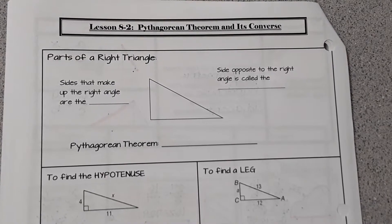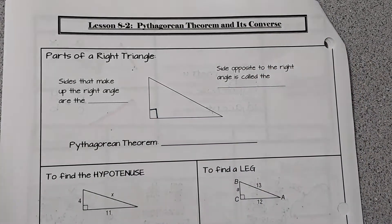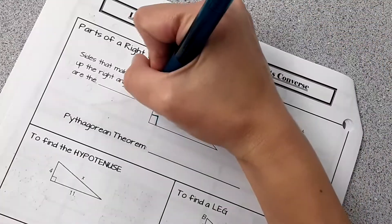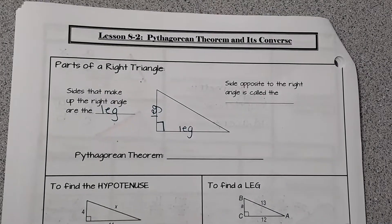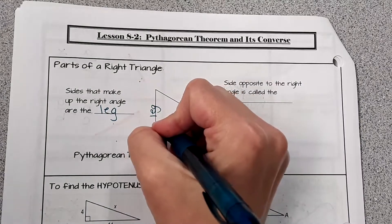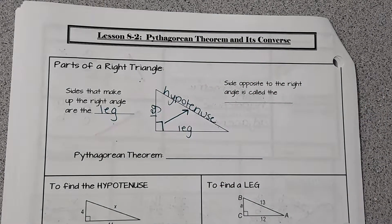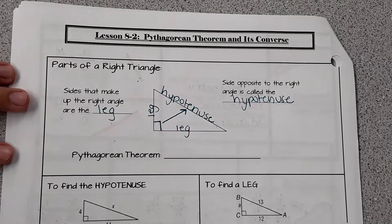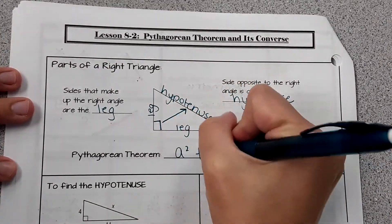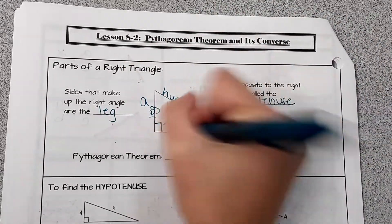Lesson 8-2: Pythagorean Theorem. A lot of this will be review. On a right triangle, this corner is 90 degrees, and we know that because of that little square. The sides adjacent to that 90-degree angle are called the legs of the triangle. Then the side opposite the 90-degree angle is called the hypotenuse. The hypotenuse is the longest side of the triangle. The Pythagorean Theorem is a squared plus b squared equals c squared, where a and b are the legs and c is the hypotenuse.